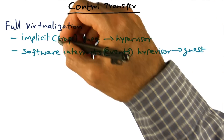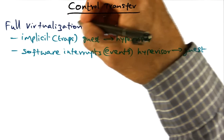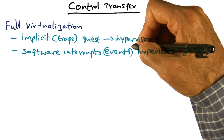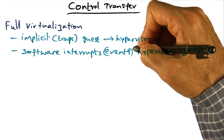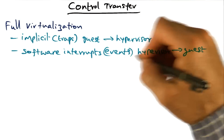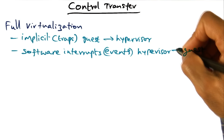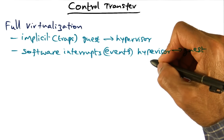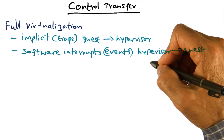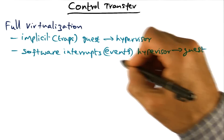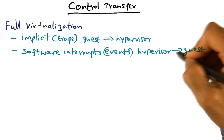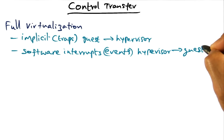That's how control is transferred from the guest to the hypervisor — implicitly. And in the other direction, control transfer happens via software interrupts or events from the hypervisor to the guest.